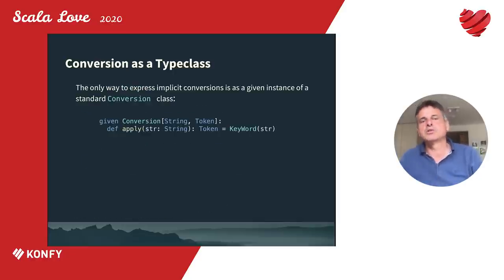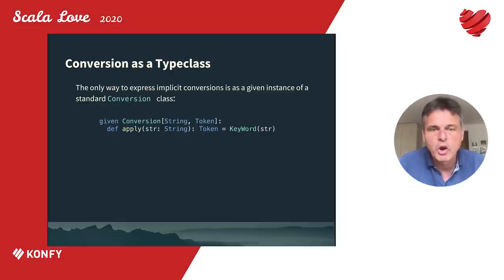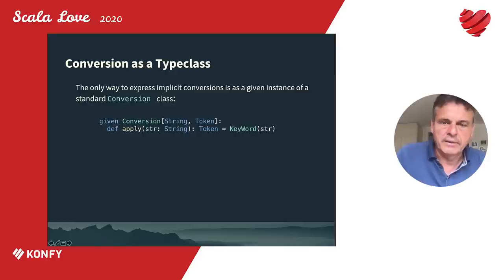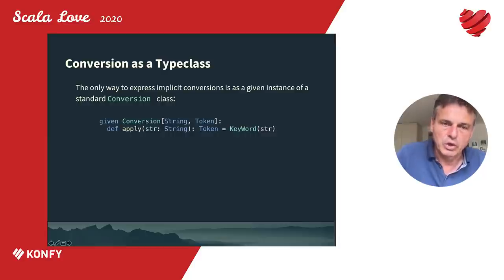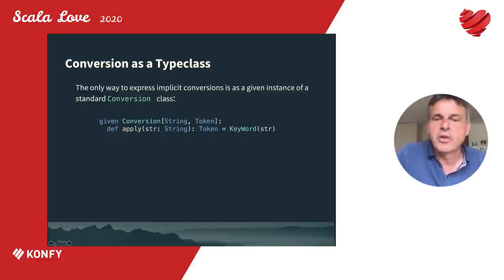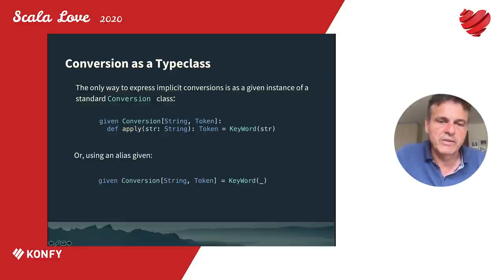Implicit conversions still exist but are now only available as a special type class called Conversion. You can write 'given Conversion[String, Token]' and define the apply method, or use an alias given such as 'given Conversion[String, Token] = keyword.' This makes implicit conversions more controlled and intentional.